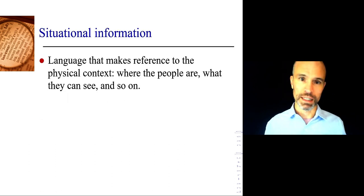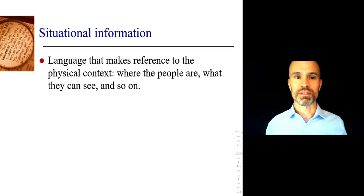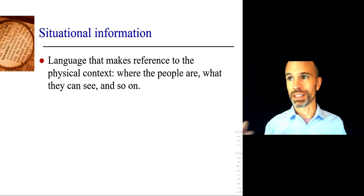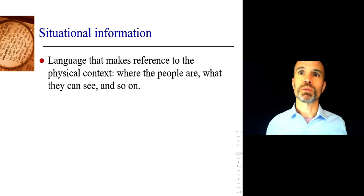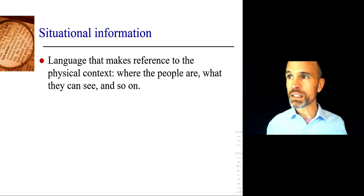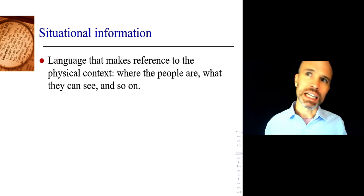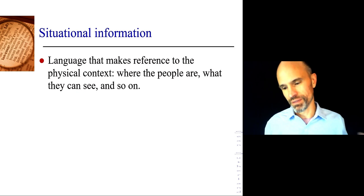Situational information is where we understand language because it refers to the physical context — where are we, what can we see, hear, or smell? We often take a shortcut; we don't say everything because we're in the same shared space. Even on the telephone, we refer to things we know the other person will understand because of where they are, even if they're not with us.